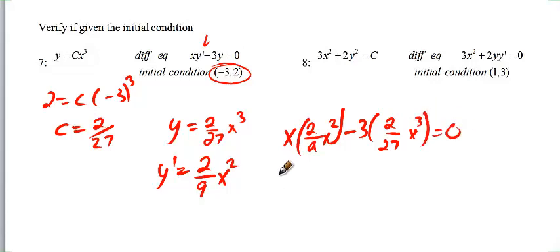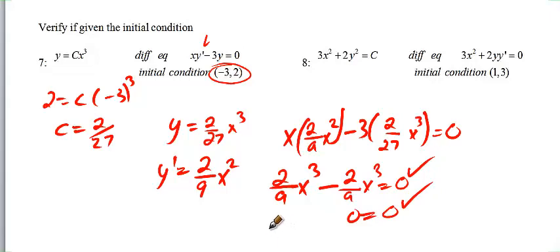So we have 2 over 9, x cubed, minus, well, 3 goes into 27, 9 times, 2 over 9, x cubed, equals 0. 0 does equal 0, so we have checked that.